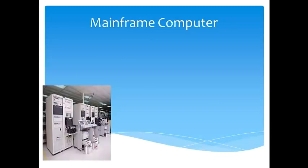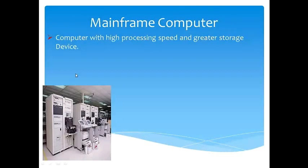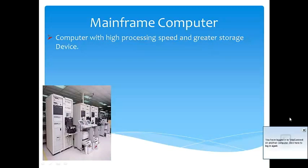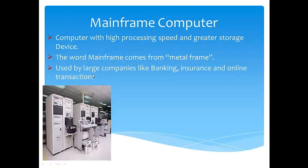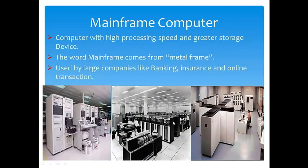First we will see the mainframe computer. These are very large computers. In earlier days, the term mainframe came from the metal frame — all components were made up of metals. Mainframe computers have very high processing speed and great storage capacity. They are used by large companies like banking sectors, insurance, and online transactions because of their great processing speed and storage.